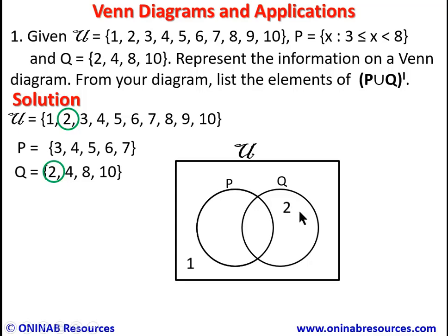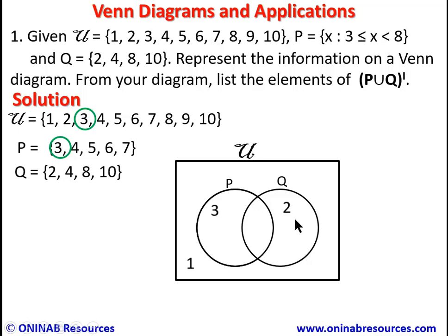3 is in P but not in Q, so we place it in the P-only region. The P-only region is on the left side of the intersection, Q-only is on the right, and the intersection is where they overlap. 4 is in both P and Q, so we place 4 in the intersection region where P and Q overlap.